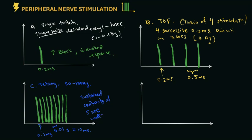Interpretation-wise, a sustained contraction of five seconds or more is equal to adequate reversal from neuromuscular blocking agent.